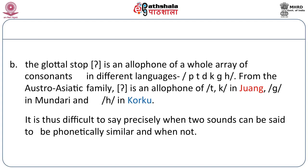Then, in many languages, the consonants /p/, /t/, /d/, /k/, /g/, /h/—any of them may have the glottal stop as an allophone. The glottal stop and these consonants are not phonetically very similar. For example, if /p/ and the glottal stop are allophones, and /g/ and the glottal stop are allophones, and /d/ and the glottal stop are allophones, the notion of phonetic similarity does not seem clearly understandable. It is thus difficult to say precisely when two sounds can be said to be phonetically similar.